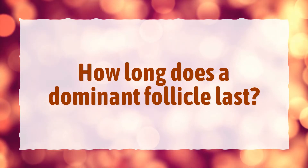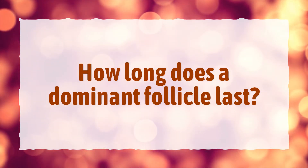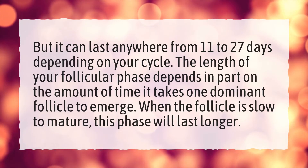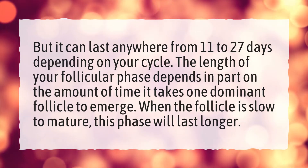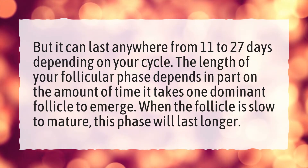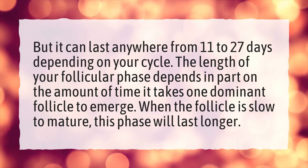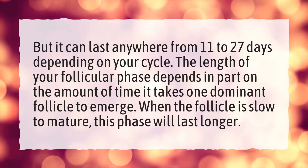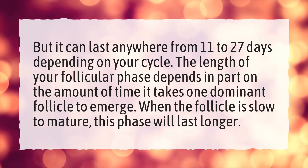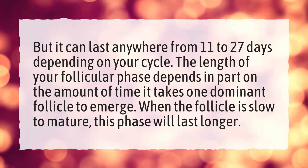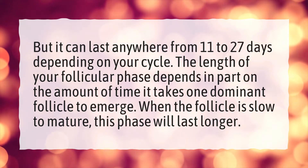How long does a dominant follicle last? It can last anywhere from 11 to 27 days depending on your cycle. The length of your follicular phase depends in part on the amount of time it takes one dominant follicle to emerge. When the follicle is slow to mature, this phase will last longer.